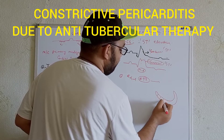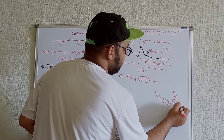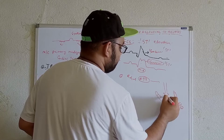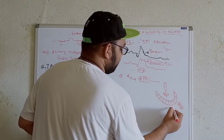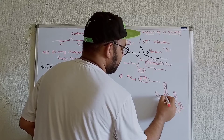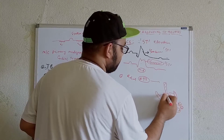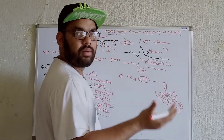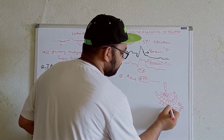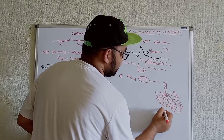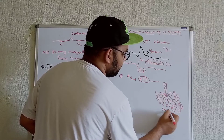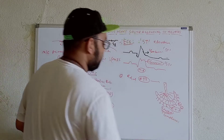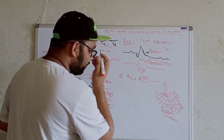This is the normal ventricle. Whenever the blood coming from the atrium — for example during rapid ventricular filling — hits the endocardium and the myocardium, the ventricle has compliance and it will get expanded, stretched out just like this. You can get this stretching because of the compliance.